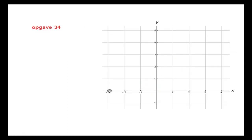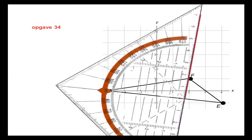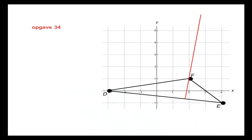Dan gaan we even naar opgave 34. Ik heb driehoek DEF en daarin moet ik hoogtelijnen tekenen. De hoogtelijnen die hier getekend worden zijn wat verraderlijker, want ze vallen voor een gedeelte ook buiten de driehoek. We gaan eerst een hoogtelijn tekenen vanuit F op DE. Dan gaan we de volgende hoogtelijn tekenen vanuit D, loodrecht op EF. Als ik mijn geodriehoek aanleg, moet ik ervoor zorgen dat EF eerst verlengd wordt tot buiten de driehoek, want anders kan ik vanuit D niet een lijn tekenen die loodrecht op die overstaande zijde staat.